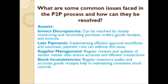What are some common issues faced in the P2P process and how can they be resolved? Invoice discrepancies can be resolved by closely monitoring and reconciling purchase orders, goods receipts, and invoices. Late payments can be addressed by implementing efficient approval workflows and automatic payment runs. Supplier management issues can be handled through regular reviews and updates of vendor master data. Stock inconsistencies can be managed through regular inventory audits and accurate goods receipt postings.